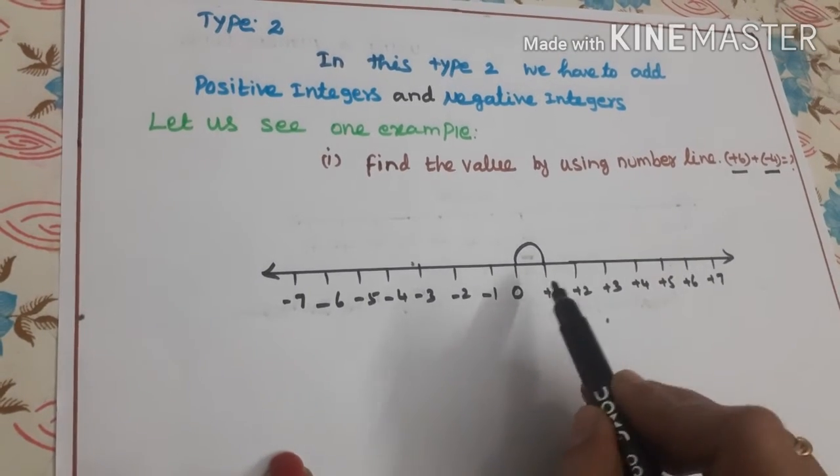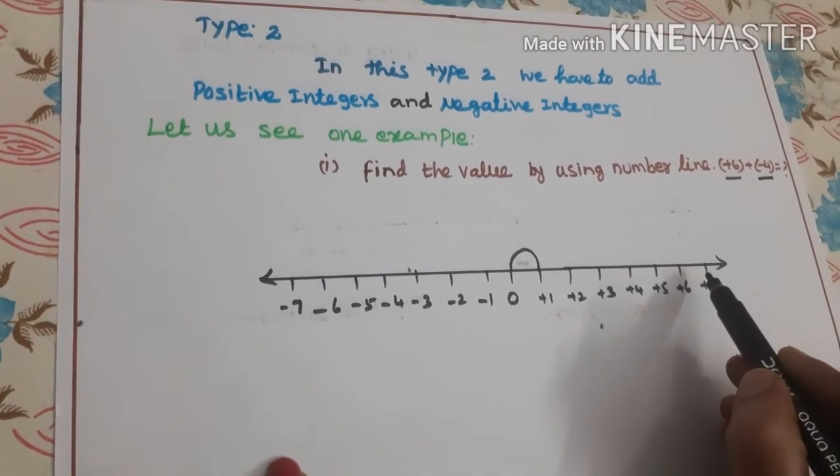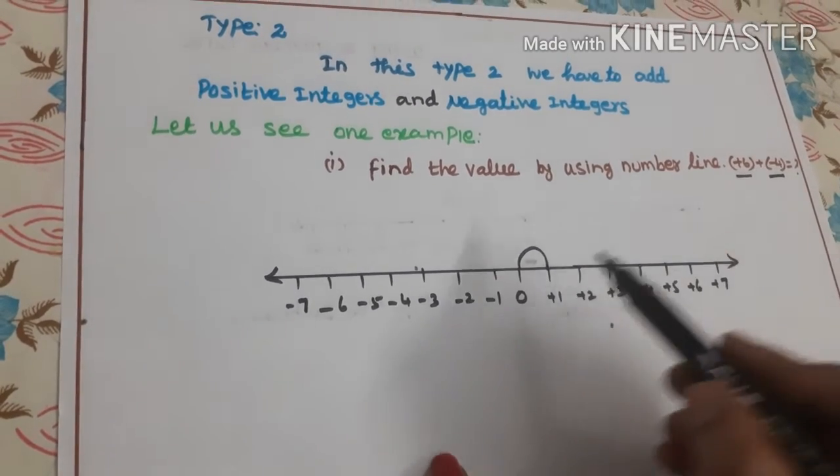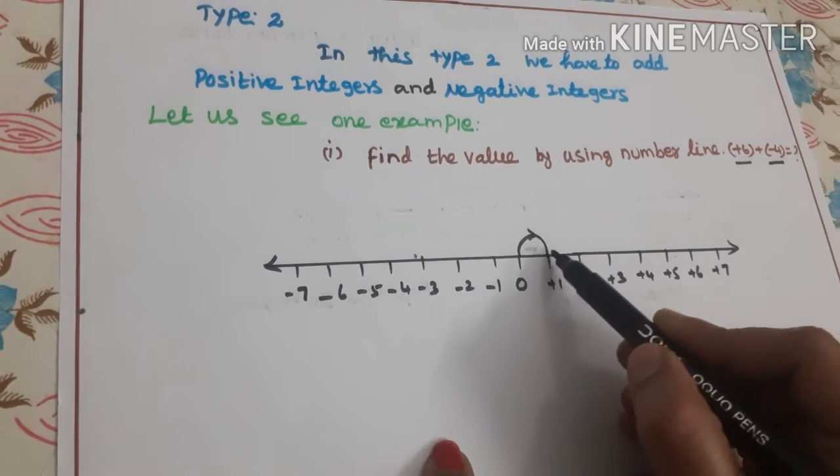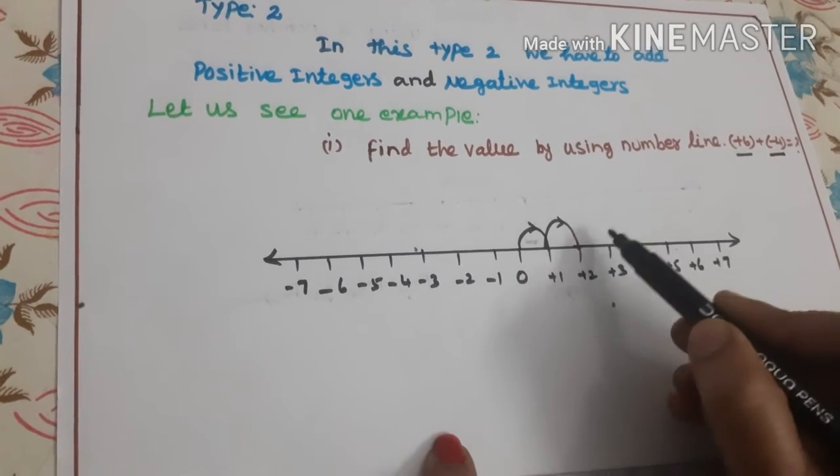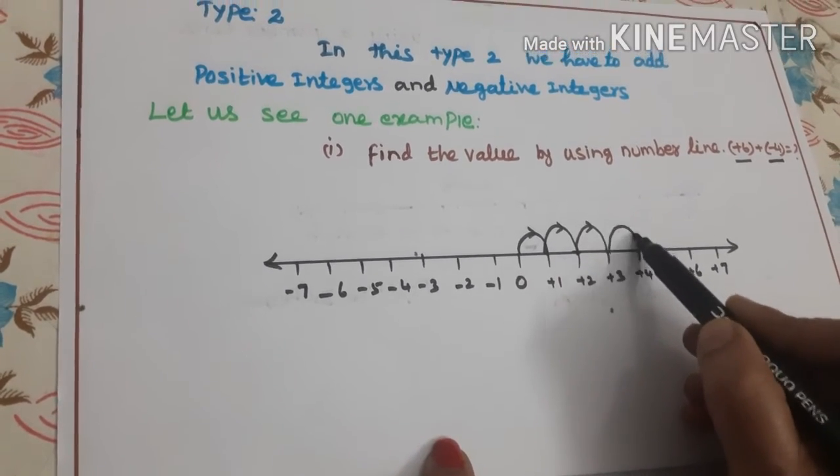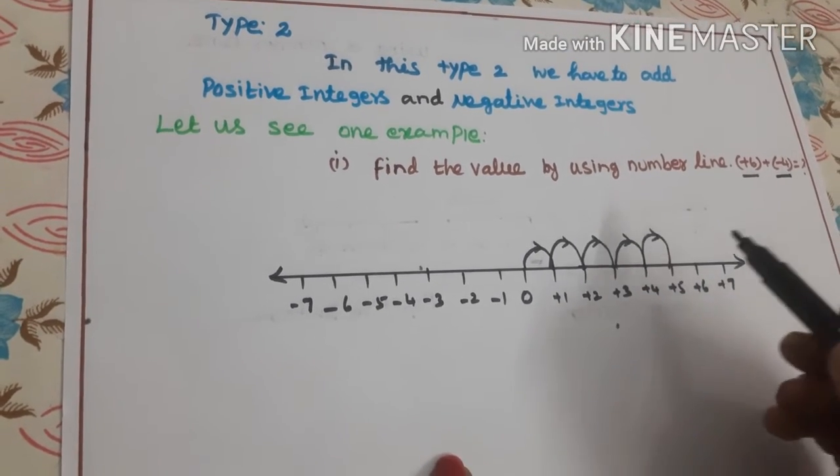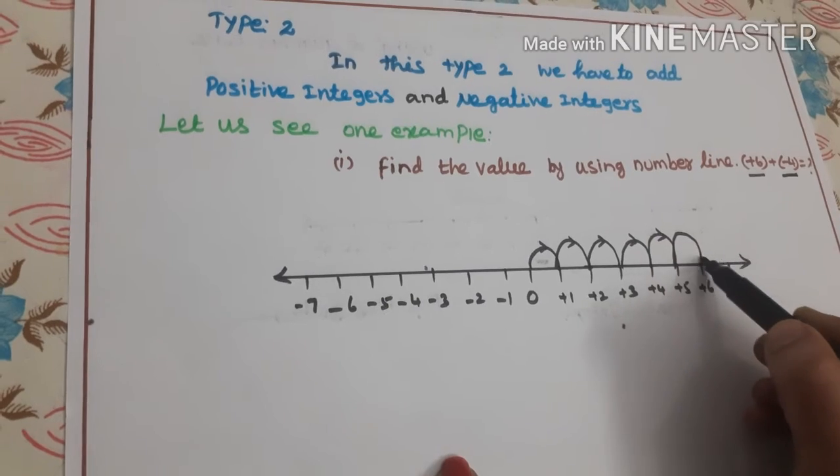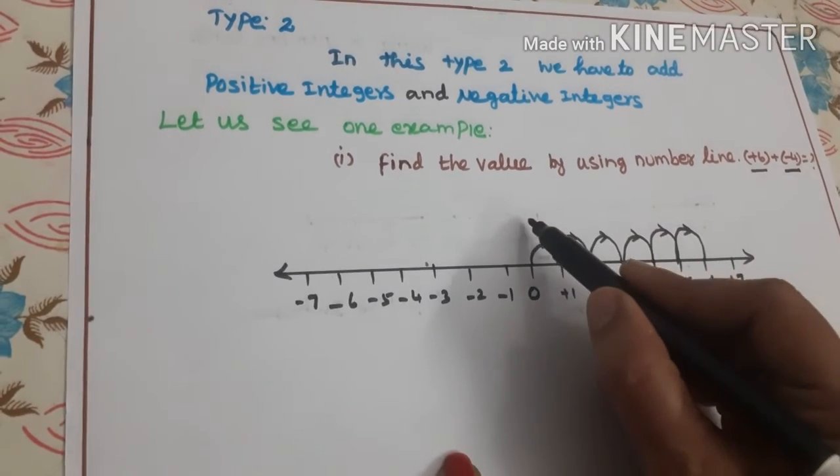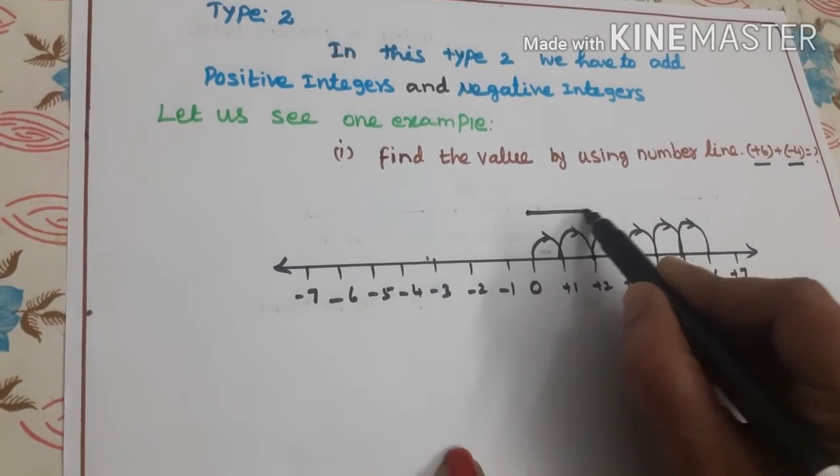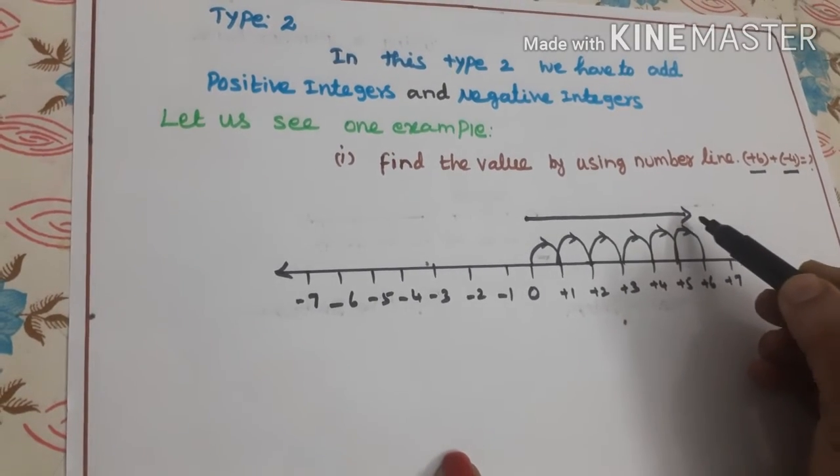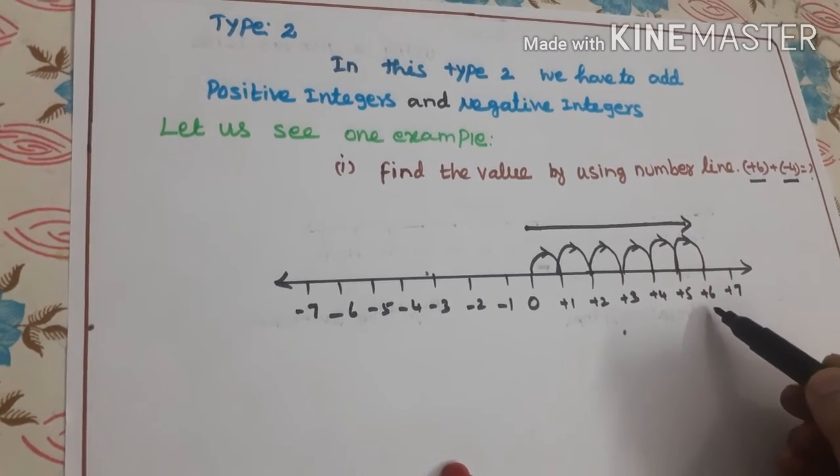We have to move right side of the number line into 6 places: 1, 2, 3, 4, 5, and 6. From here, from 0, we have to reach 6 places. We will get positive 6.